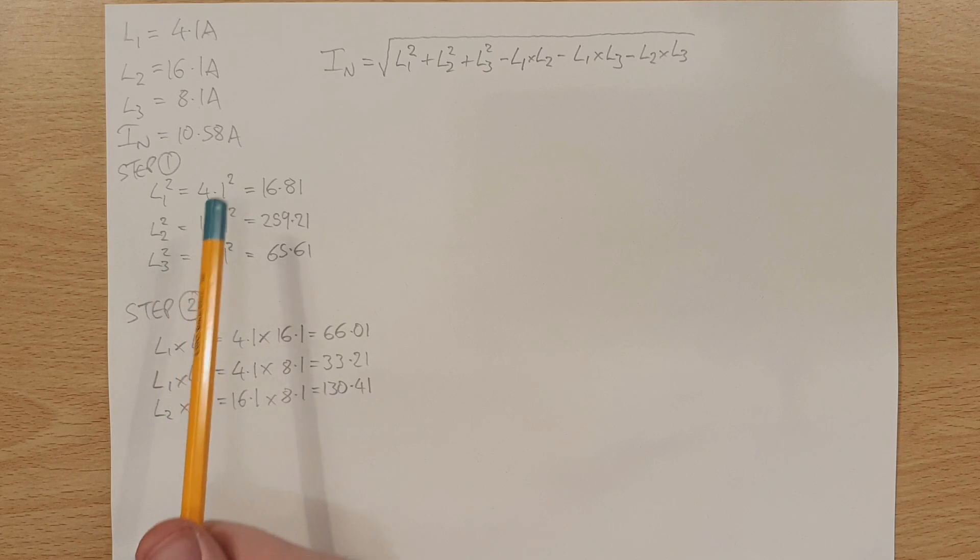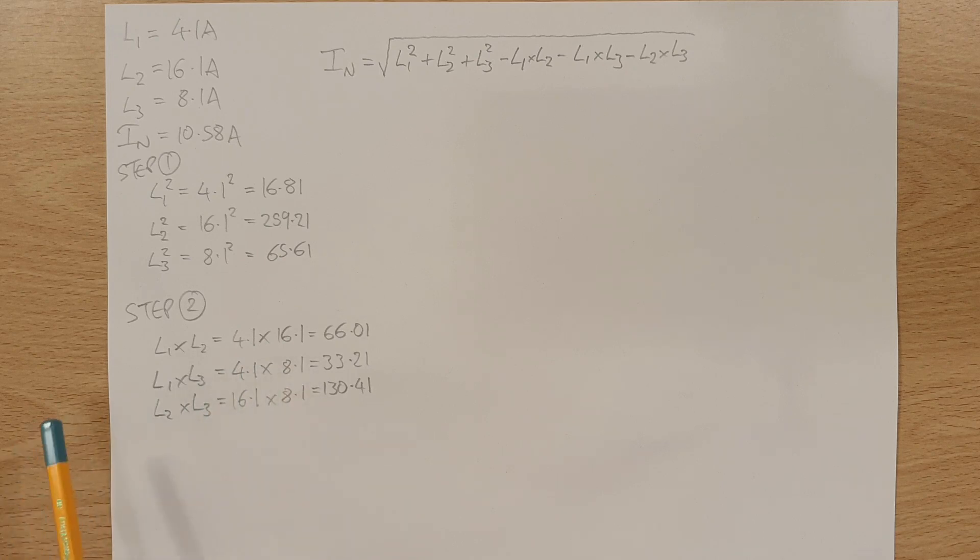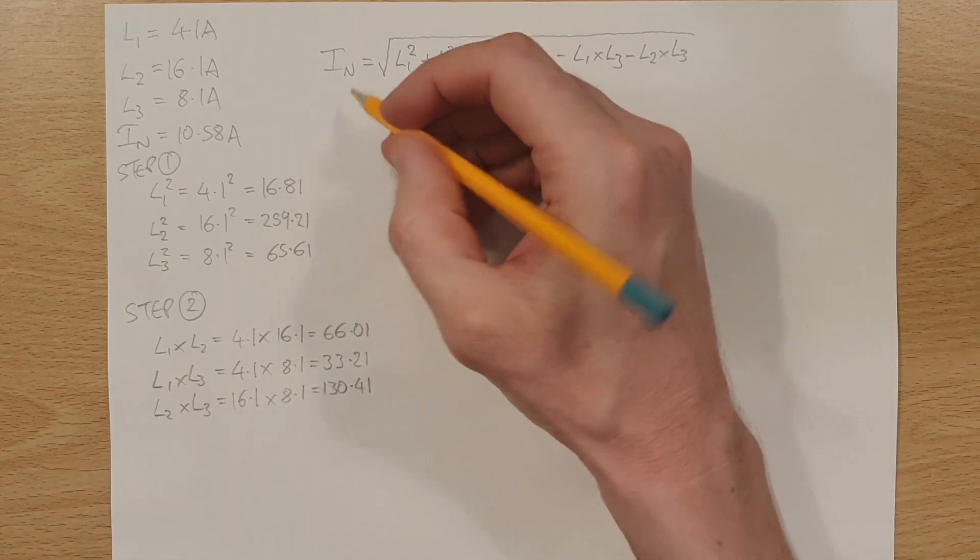So we've done the squaring of the currents. We've done the multiplying of the currents. And really, all we've got to do now is just put these numbers into the formula. So let's do that now.